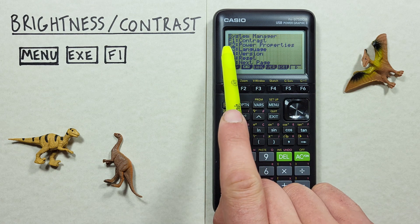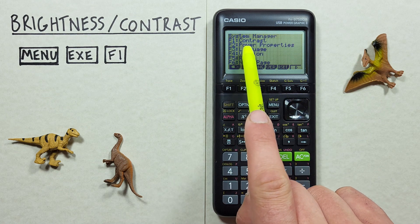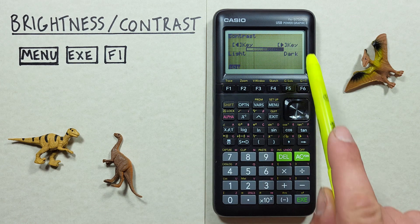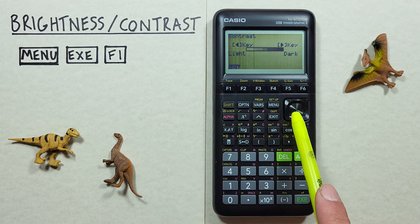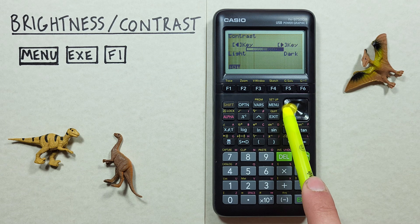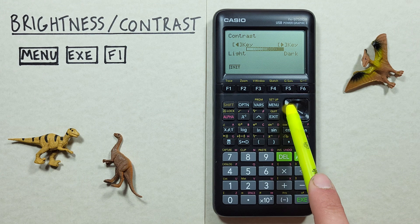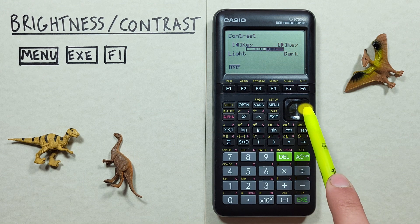The first option F1 is contrast, that's the one we want. So we press F1 and that brings us to this screen here where we can scroll to the left to make our screen brighter or to the right to make our screen darker.